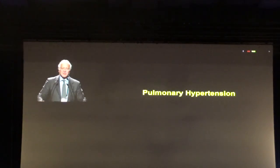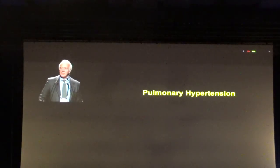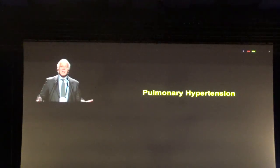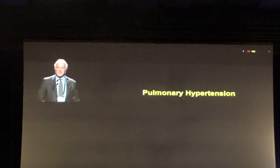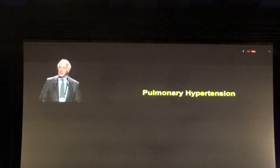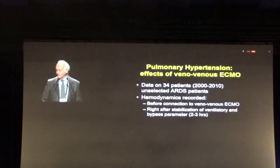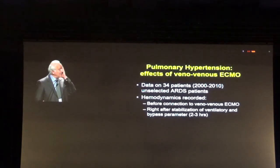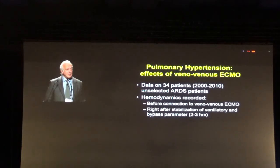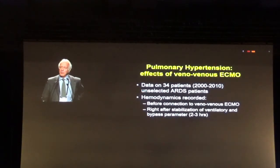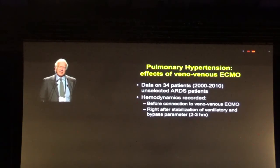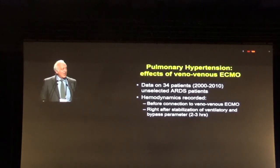Hypoxic vasoconstriction redistributes blood flow to the ventilated regions, but this is done at the cost of increased right ventricular work. I will now show you data from Monza, where I worked up to 2015.